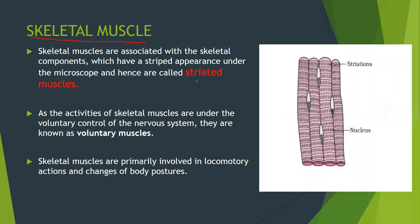Let's first take skeletal muscle, which is also known as voluntary muscles or striated muscles. These skeletal muscles are associated with and attached to the skeletal system. They have light and dark bands — a striped appearance known as striations — and that's why they are called striated muscles. The activity of these muscles is under our control, so they are voluntary in nature. They are primarily involved in locomotion and change in body posture. They are cylindrical in shape and uninucleated.